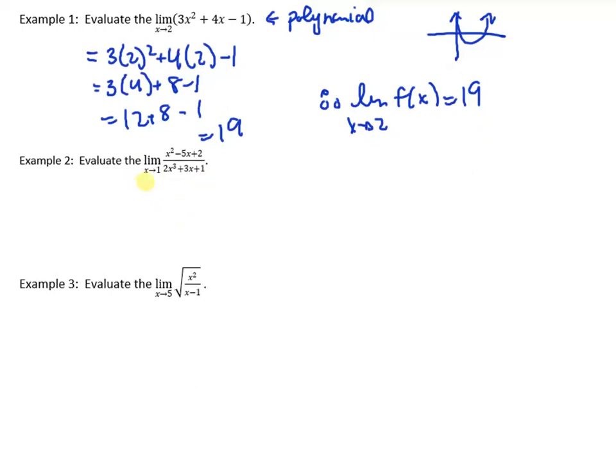Now, the second one. We always test. The number one thing to do is to test if we can just plug right in, because you're going to save a lot of time. So plug this in. Let's see what happens. 1³ + 3(1) + 1. We get 1 - 5 is -4, plus 2 is -2. 2 + 3 is 5, plus 1 is 6. Therefore, the limit's -1/6. So that works out too.